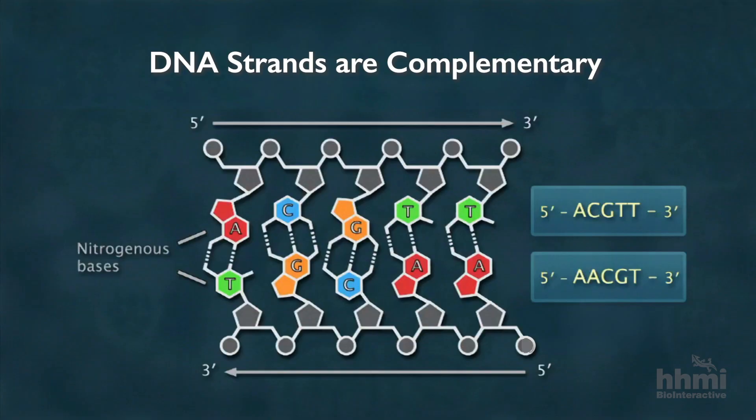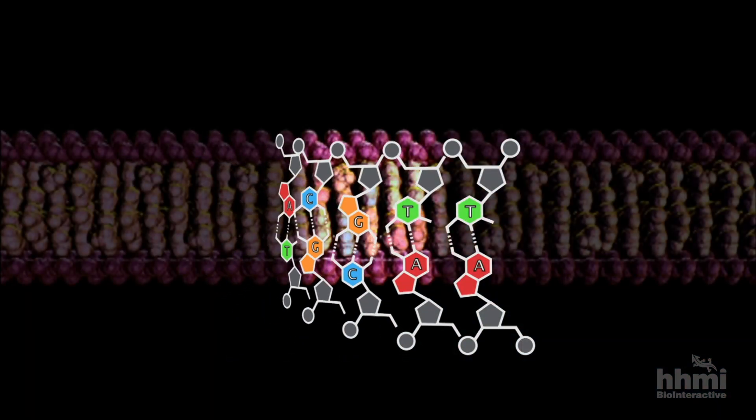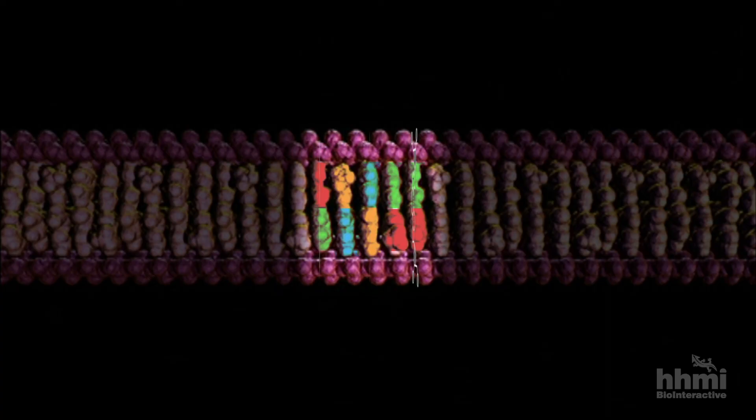The five pairs of nucleotides we looked at are only a small part of this DNA molecule. But the components and relationships are true for all DNA.